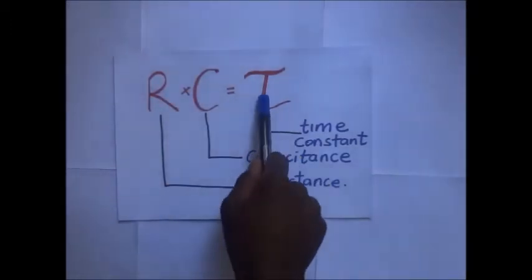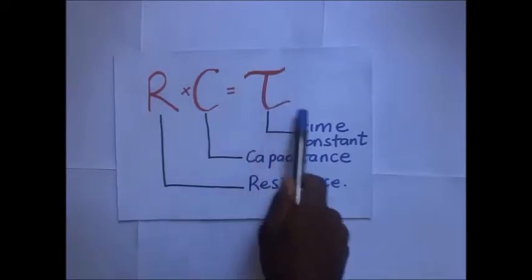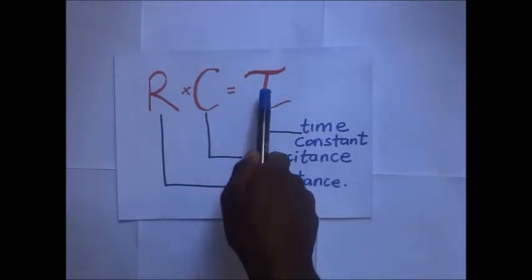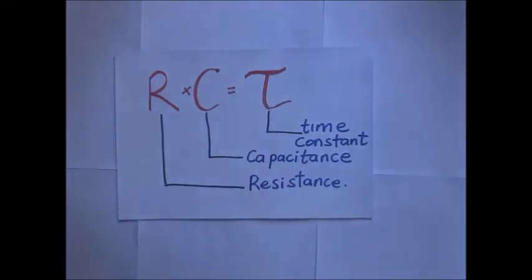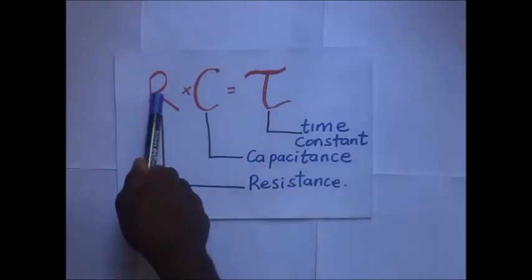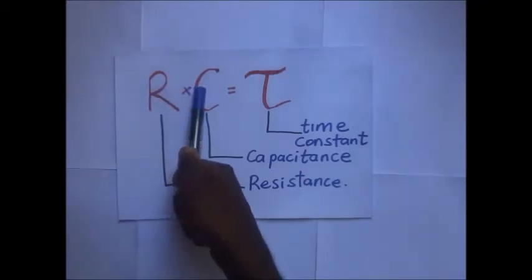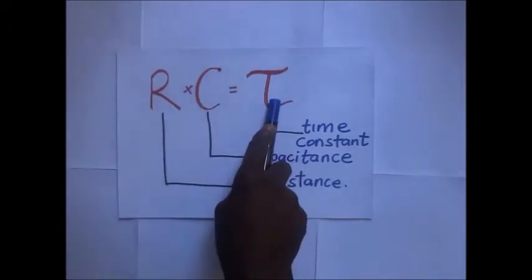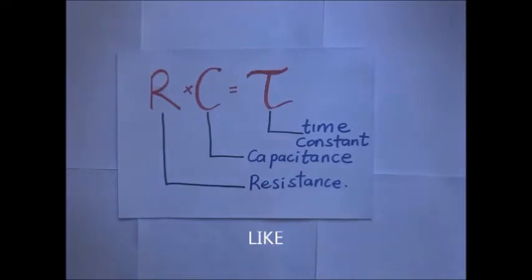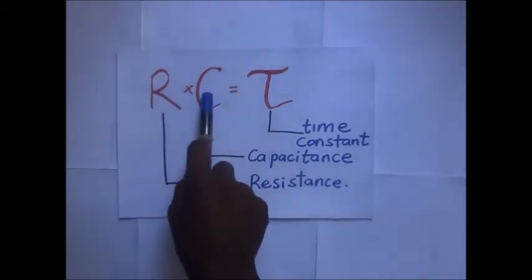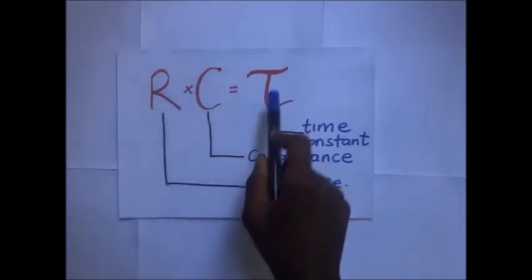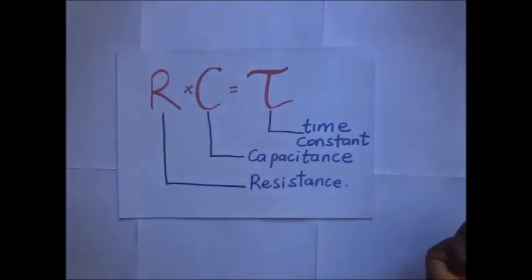R times C gives us a constant called the time constant. This constant characterizes the rate of charging and discharging of the capacitor. If the resistance or the capacitance is small, the time constant is small and the rate of charging and discharging is faster. If both resistance and capacitance are high, the time constant is large and the rate of charging and discharging will be slow.